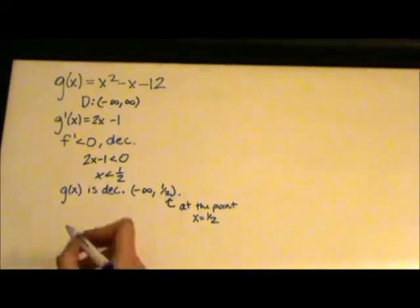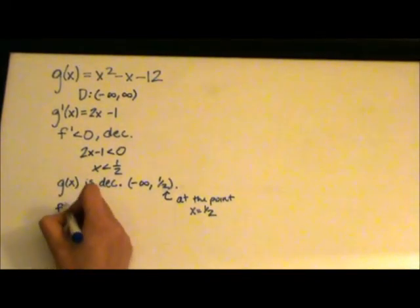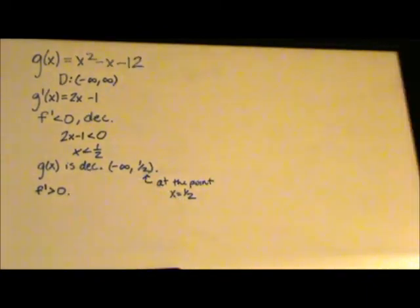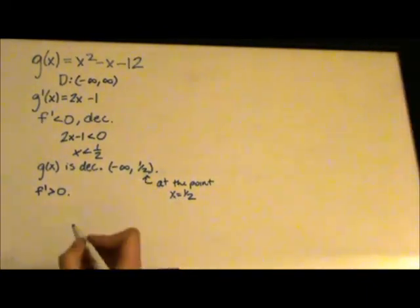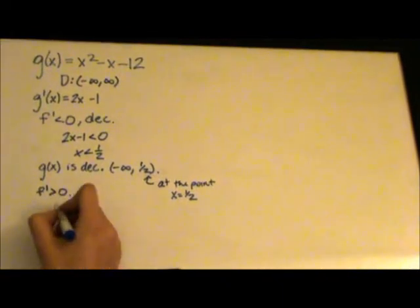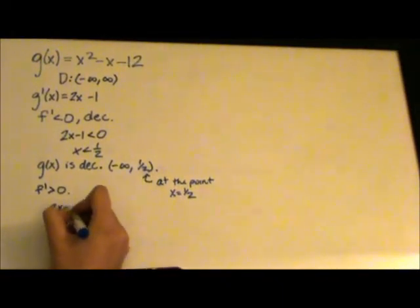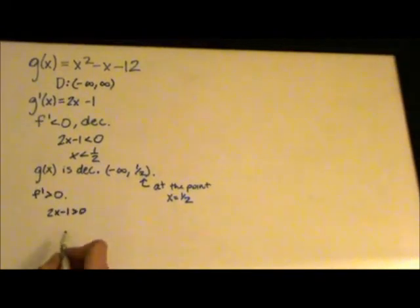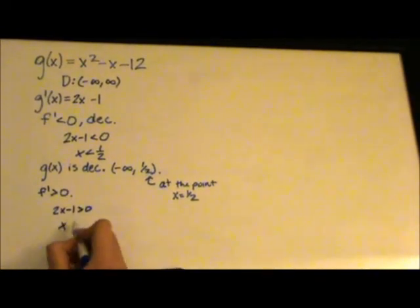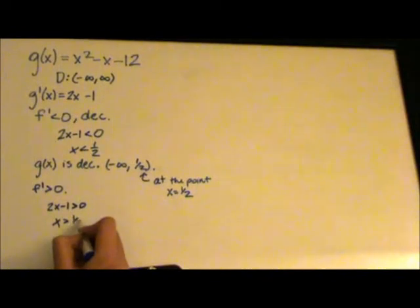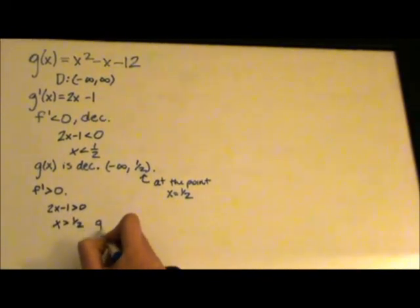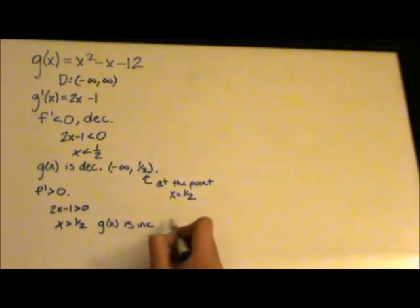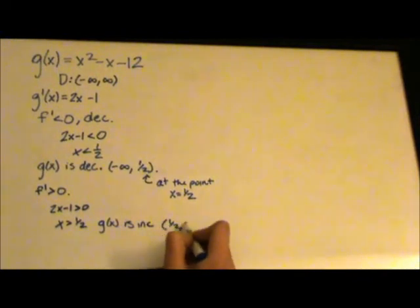Let's see where this function is increasing, which means where this function's derivative is going to be greater than 0. In order to solve this, we're going to set the first derivative of g(x), or 2x - 1, greater than 0. When we solve this, it turns out to be x > 1/2, meaning that g(x) is increasing over the interval (1/2, ∞).